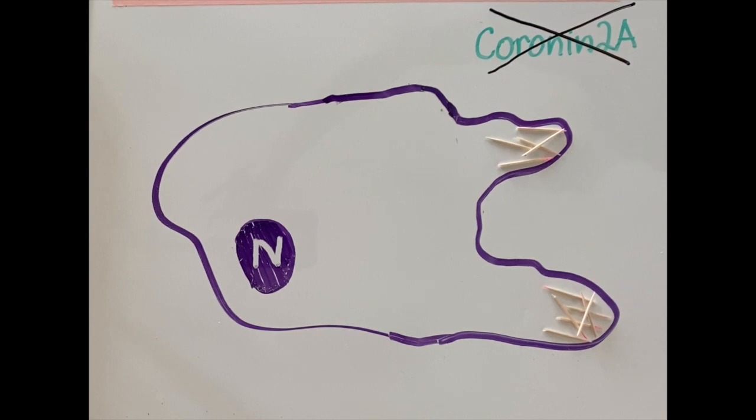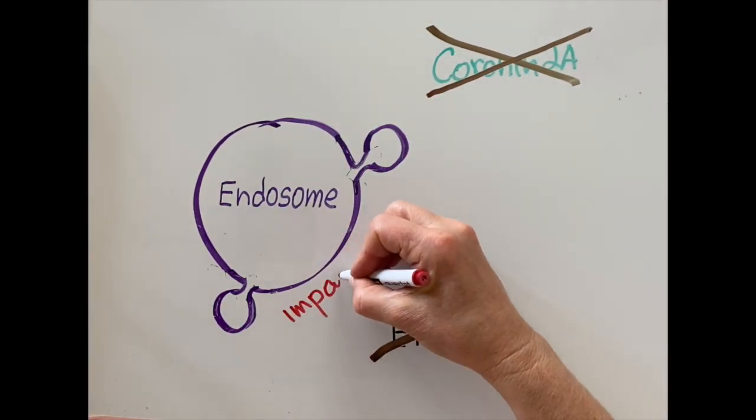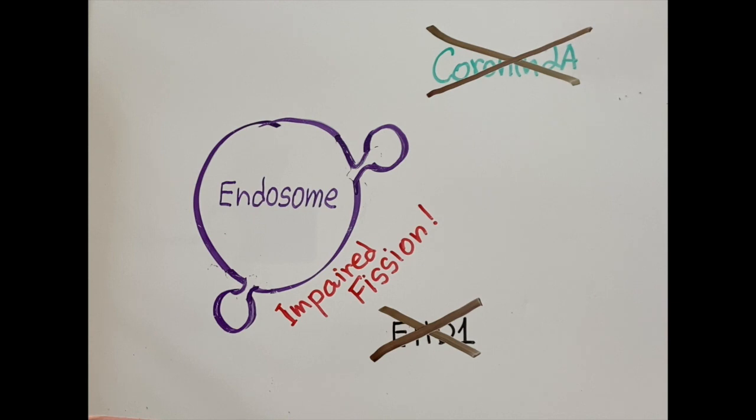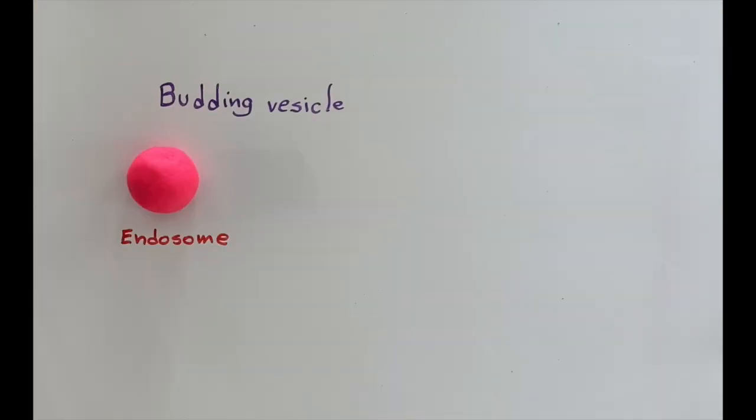We showed that loss of coronin-2A, or EHD1, impairs endosomal fission and endocytic recycling. Our findings suggest that branched actin is initially involved in endosomal membrane budding.